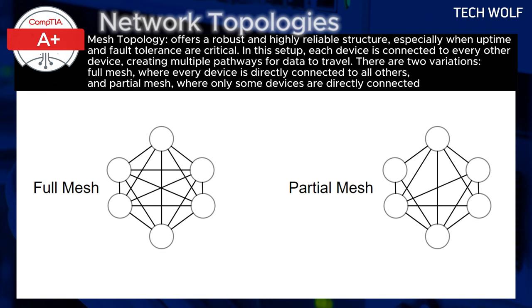The multiple paths ensure that if one link fails, data can still be transmitted through alternative routes. This makes mesh networks extremely reliable, particularly in large or critical networks. However, the downside is that it is expensive and complex to implement because of the large number of connections and cabling required. Managing and maintaining a mesh network can also be challenging due to its complexity.